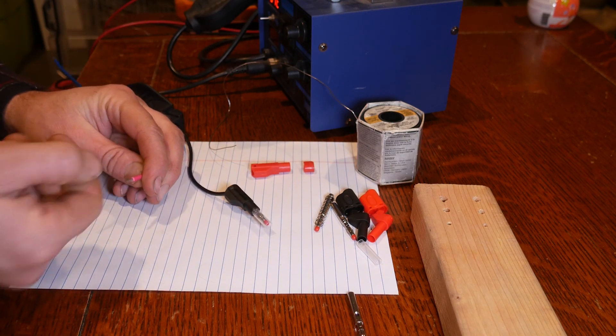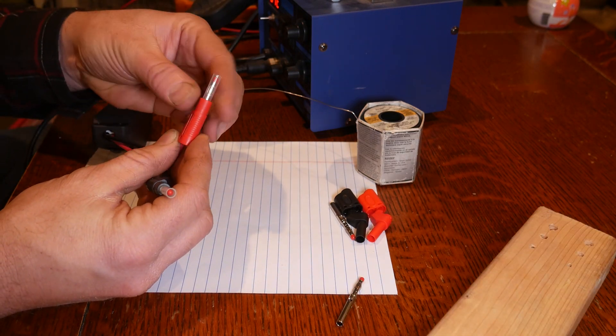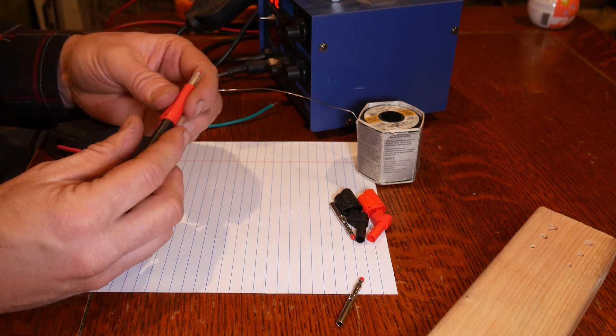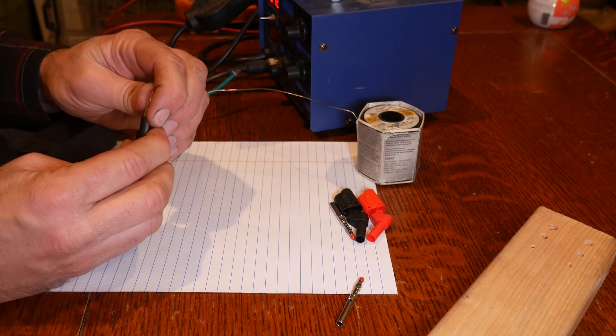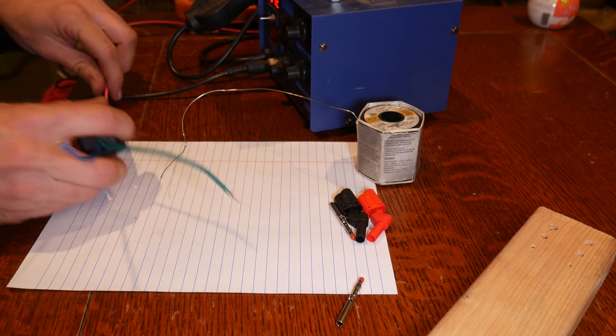So I'll go ahead and solder up this other terminal and then we'll jump to the other side. Okay, we have the red side done as well. These can be plugged in back to back just like the other style I'm using. They just have the retractable shield, which a little sticky, they might have to break in.